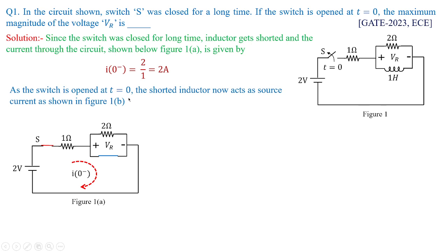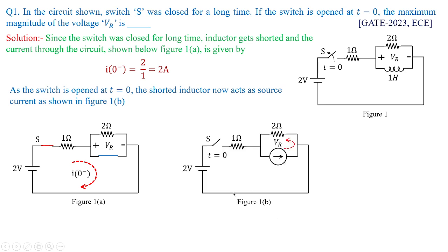As the switch is opened at t equal to 0, the shorted inductor now acts as a current source as shown in figure 1b. You can see the switch is opened at t equal to 0, so the 1 ohm which was connected in series with 2 ohms got disconnected and becomes dummy in nature. The inductor, which got charged to 2 amperes treated as I(0+), will now be driving the rest of the circuit.